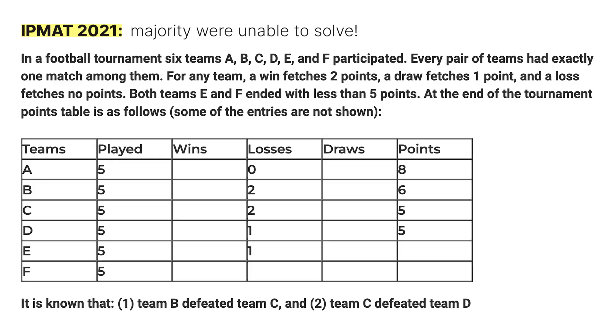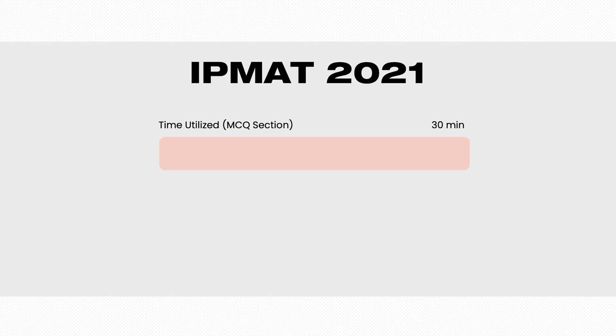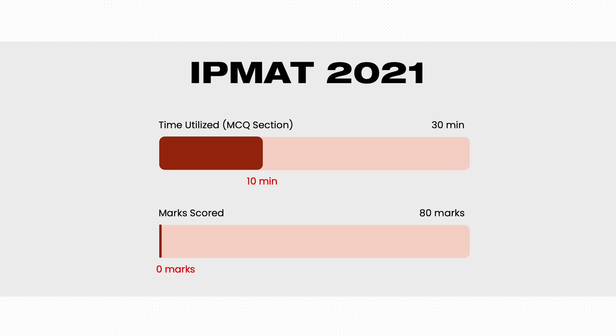However, in 2021, we had a set on tournaments and fixtures which was hard. People did not realize it and they spent almost 10 minutes just trying to tackle that DILR set, and that was 33% of their sectional time.